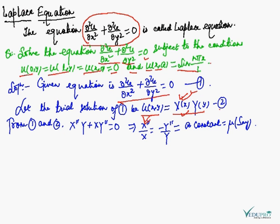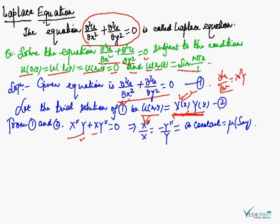Substituting u into the Laplace equation: ∂²u/∂x² can be written as X''·Y, and ∂²u/∂y² is X·Y''. Therefore substituting these values gives X''Y + XY'' = 0.